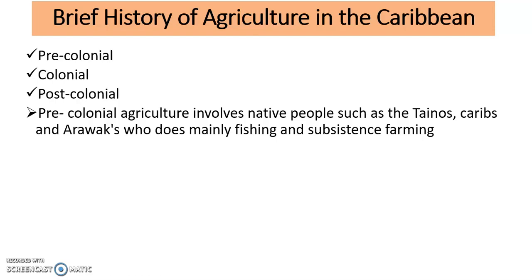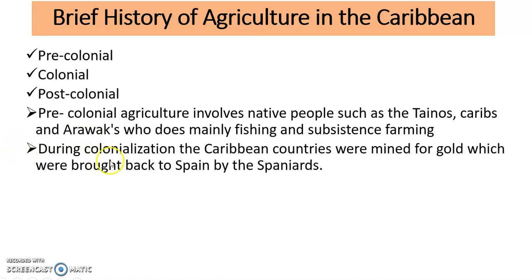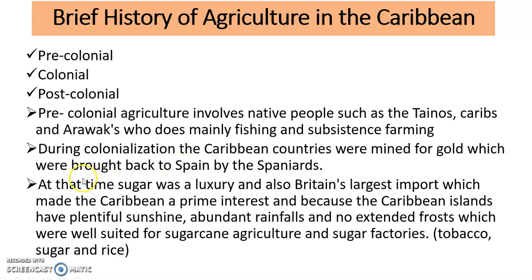They would hunt wild animals and gather wild fruits. During the colonial period — the colonization of the Caribbean — gold was mined and brought back to Spain by the Spaniards. At that time, sugar was a luxury — sugar was king — and also Britain's largest import, which made the Caribbean a prime interest. The Caribbean islands had plentiful sunshine, abundant rainfall, and no extended frost or snow, which made them well-suited for sugarcane agriculture and sugar factories.